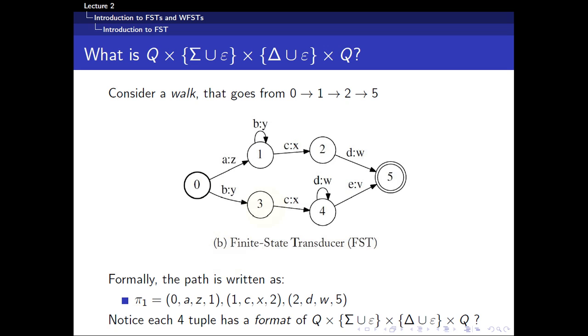Well, before moving on, I have to clear up this notation. Now, for example, if I consider a walk of 0, 1, 2, 5, this path formally is written as 0az1, then 1cx2, and 2dw5. You can see each pair of brackets here represent one transition, one arrow.